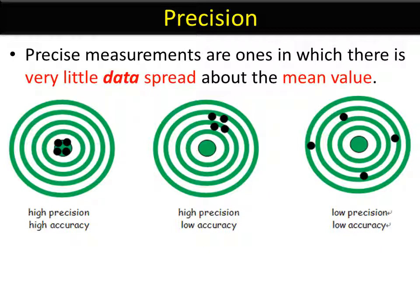On the left-hand side, it's very precise—they're all together—and extremely accurate because they all hit the bullseye. In the middle, they're very precise, all close together, but not very accurate. At the end, we have low precision. They're not all together, they're all over the place, and low accuracy.